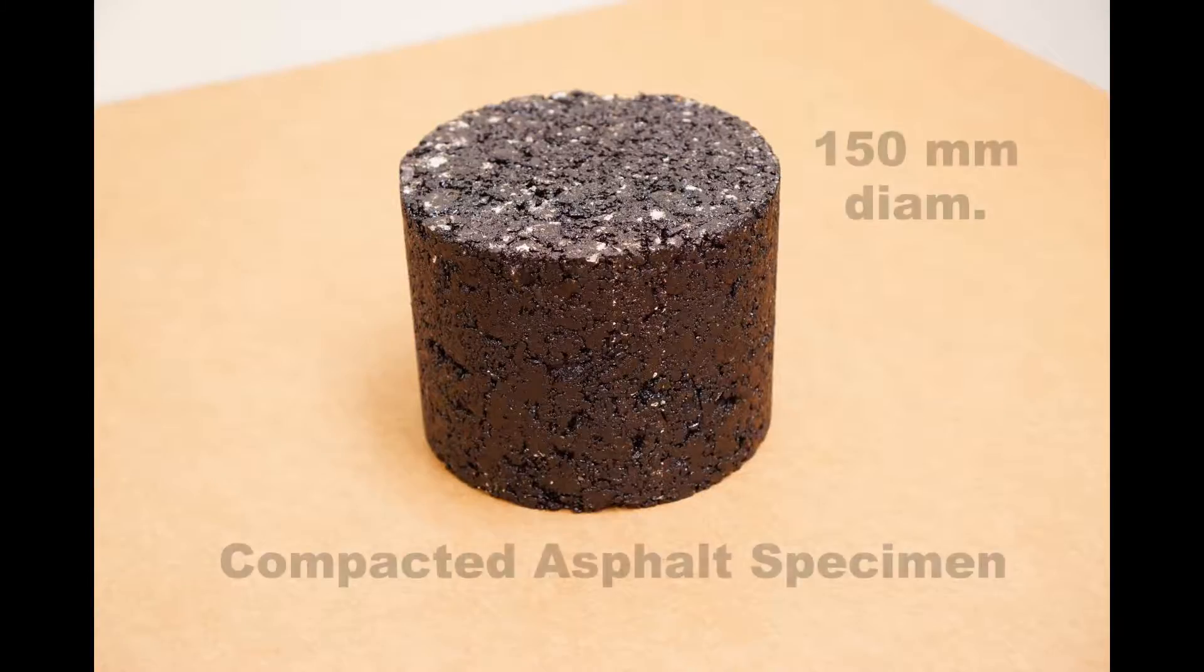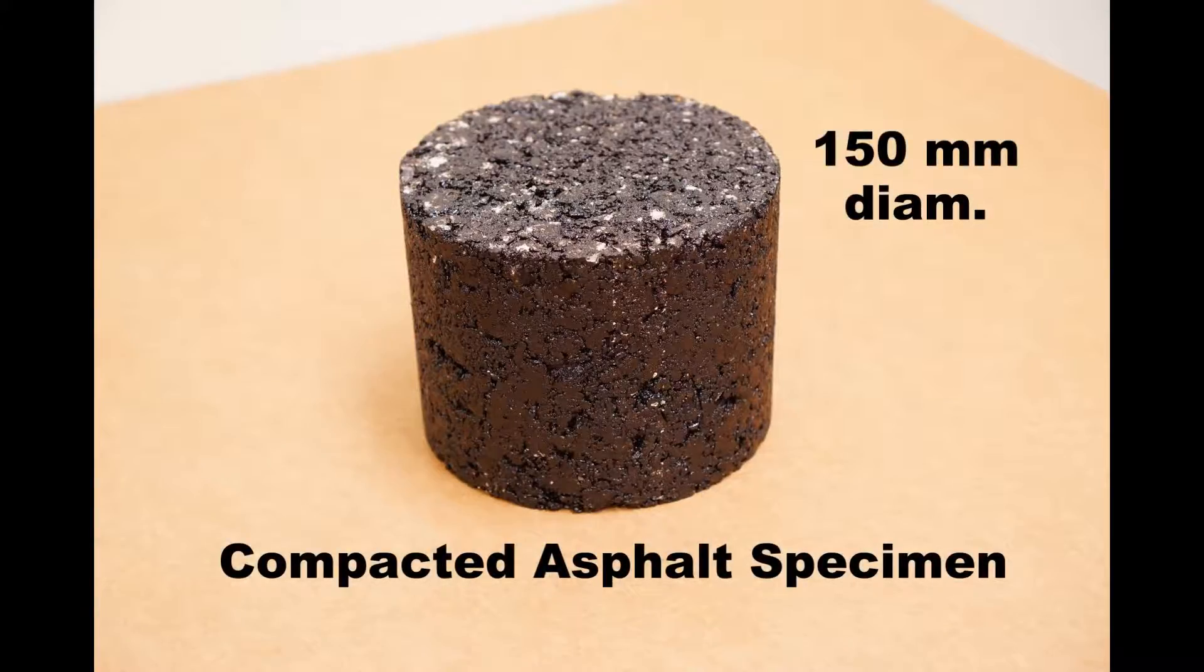The output of the gyratory compaction process is a compacted asphalt specimen. Various laboratory tests are performed on the specimen after it is compacted. One key test is to measure the specimen's density to determine the percentage of air voids it contains.